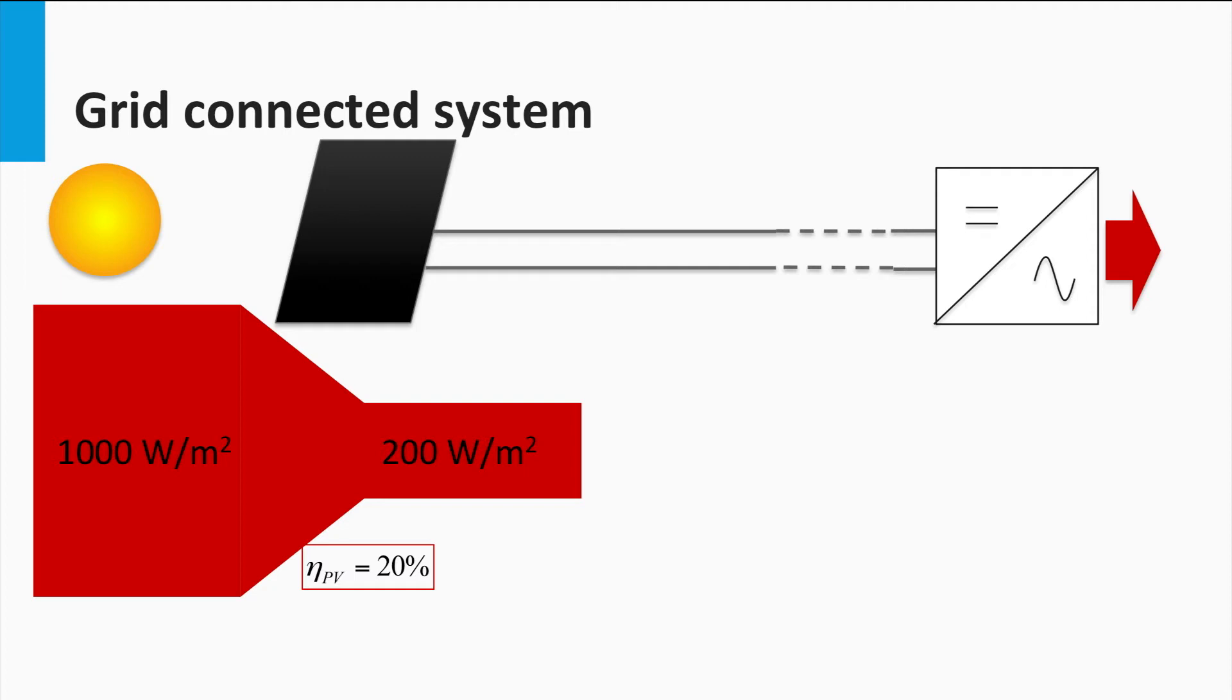In this example, let's assume that we have a cable loss equal to 2% of the PV power production, or equivalently the cables have a transmission efficiency of 98%. Therefore, the DC power per area going to the inverters is 98% of 200, which is 196 watts per square meter.